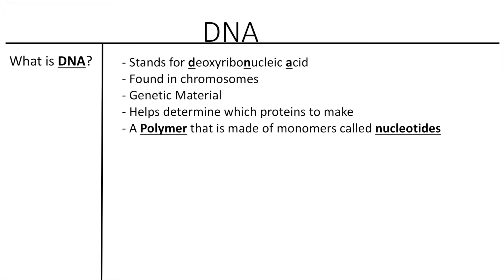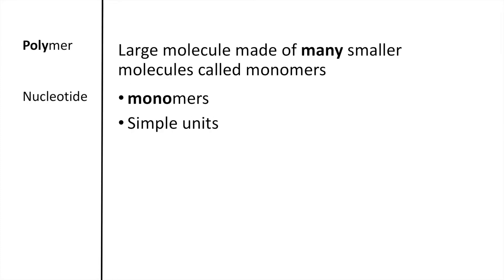DNA is also known as a polymer, which just pretty much means it's a large molecule. And it is made up of monomers, which are smaller molecules, and these are called nucleotides. A polymer is a large molecule and it's made of many smaller molecules called monomers.